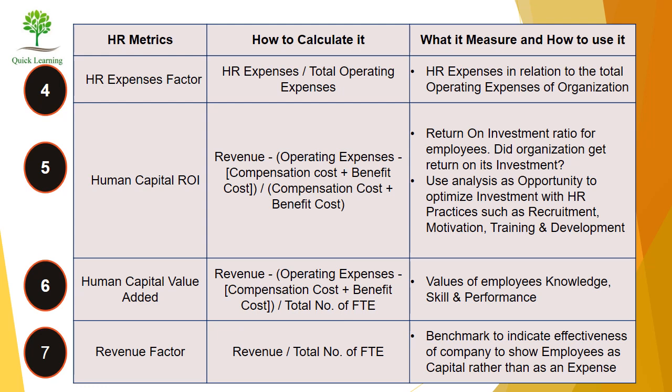Sixth, Human Capital Value Added. Its formula is: (Revenue minus operating expense minus (compensation cost plus benefit cost)) divided by total number of FTE, where FTE means Full Time Equivalent. This measurement tells us how employees add value to the organization through their knowledge, skill and performance. Seventh, Revenue Factor. Its formula is revenue divided by total number of FTE. This benchmark indicates the effectiveness of the company in treating employees as capital rather than expense.